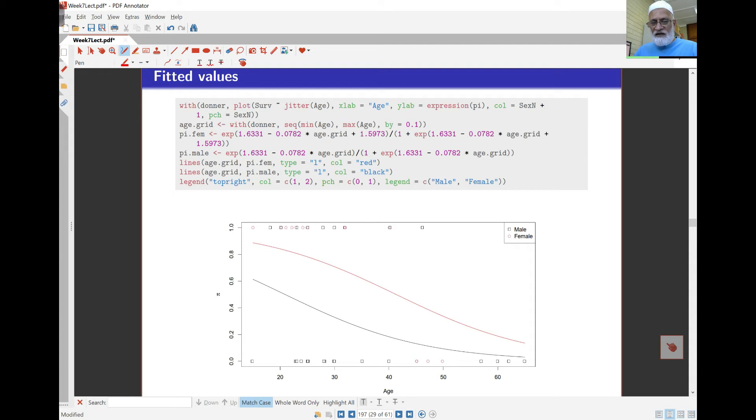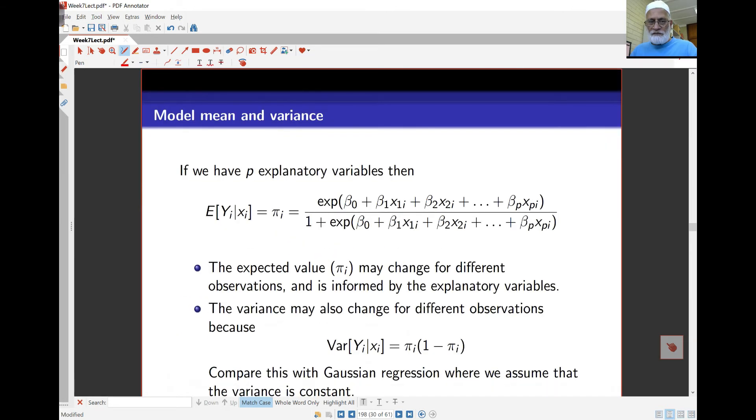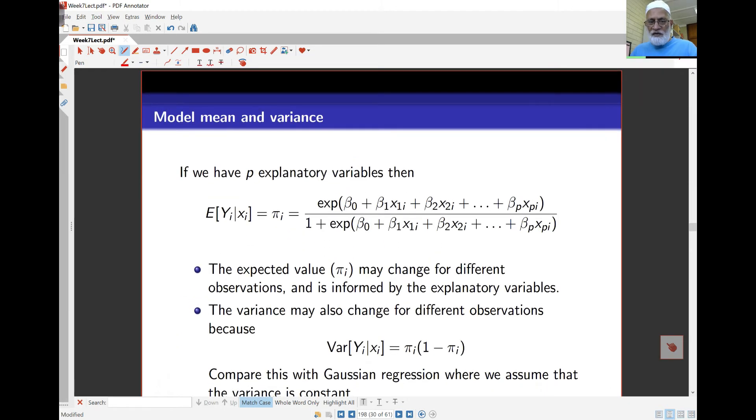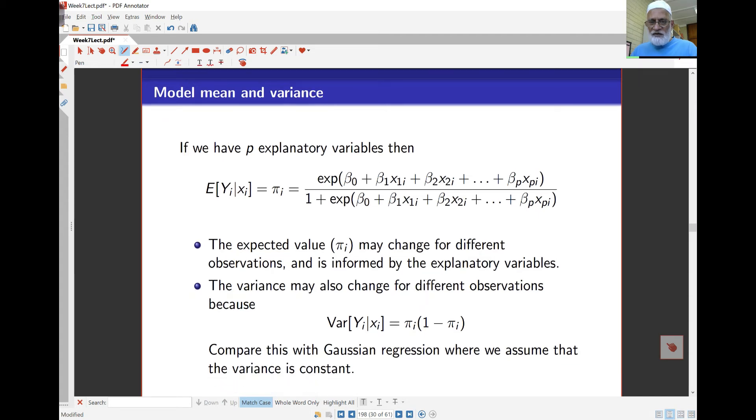You will see male survival goes down very fast with age. The females tend to stay there for a little while, and then they start going down. The expected value is given by the equation there, and the variance is pi i times 1 minus pi i, depending on the value of the x's.